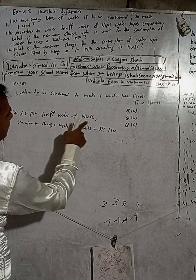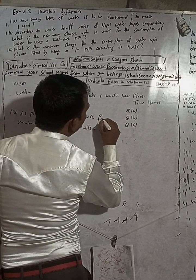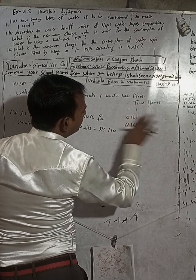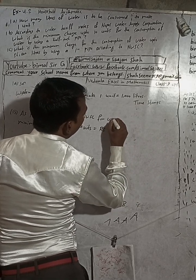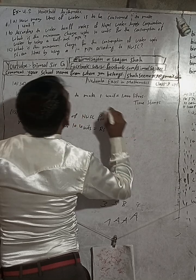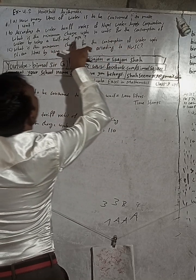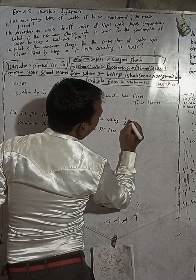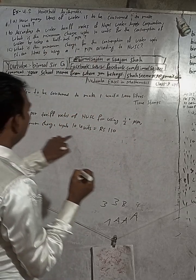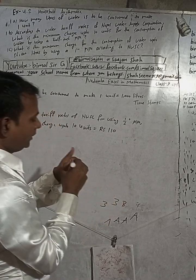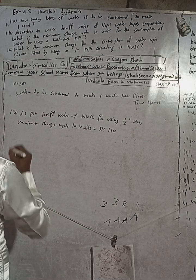As per the water tariff rates of NWSC, for using a half-inch pipe, the minimum charge up to 10 units — that means 10,000 liters — is equal to Rs. 110.